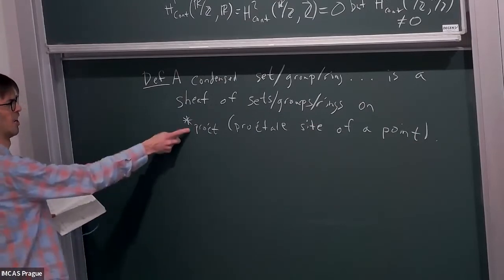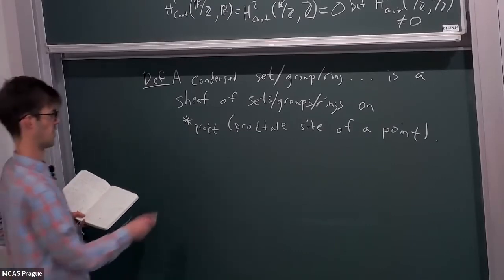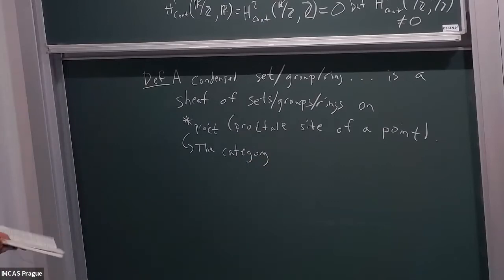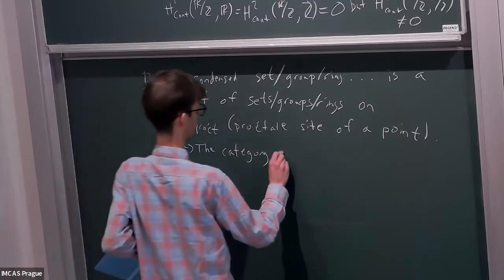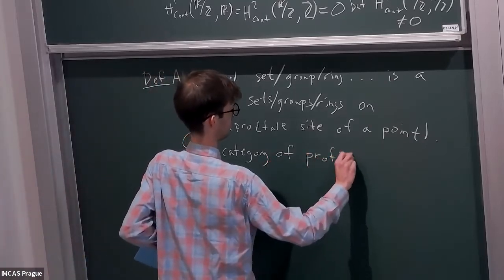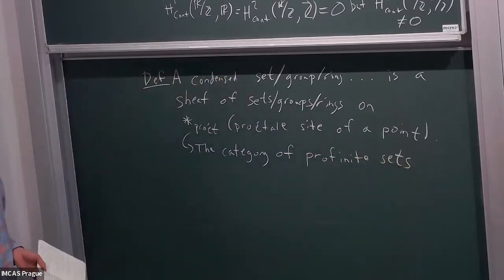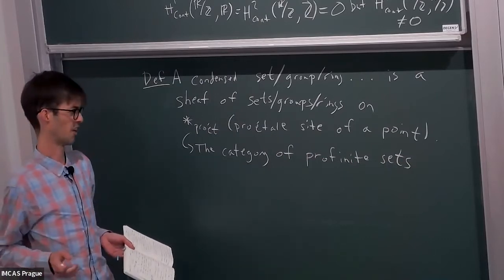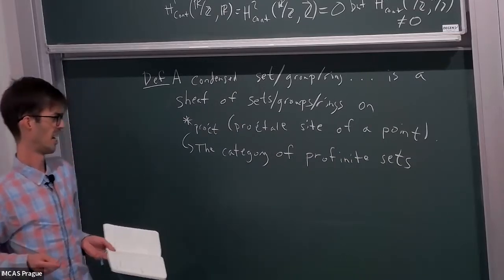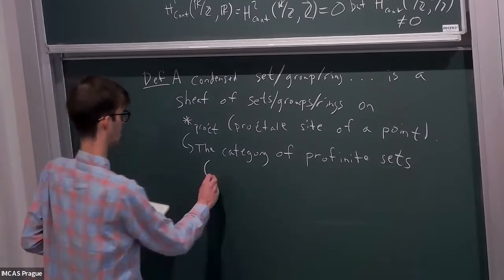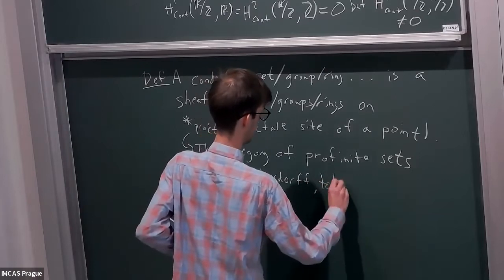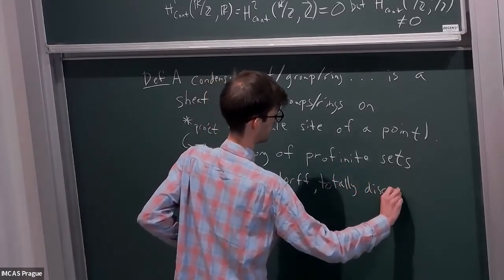What is the pro-étale site for a point? It is the category of pro-finite sets, equipped with a Grothendieck topology — a notion of cover of the objects. There are a couple of ways to characterize pro-finite sets. One characterization is that they can be expressed as inverse limits of inverse systems of finite discrete spaces. Another equivalent definition is that these are precisely the compact Hausdorff totally disconnected spaces.